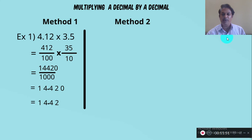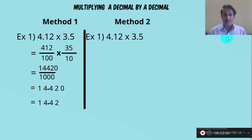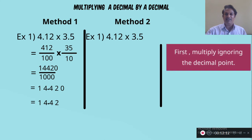4.12 into 3.5. First step: multiply the decimal fractions ignoring the decimal point. When you remove the point from 4.12 you get 412, and when you remove the point from 3.5 you get 35. So multiply 412 by 35.